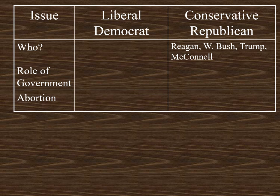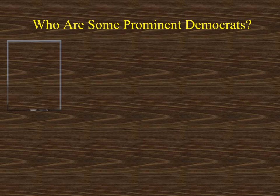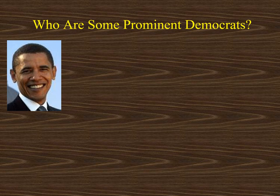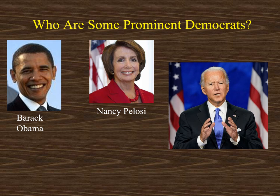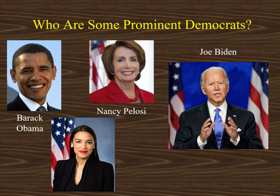On this slide, I'd like to identify some prominent Democrats. First, we see Barack Obama, who served as president from 2009 to 2017. Next, there's Nancy Pelosi — at one point she served as Speaker of the House. She is the highest-ranking woman ever in the United States government and is a congresswoman from California. Next, we see President Joe Biden, who was elected in 2020. Last, I thought I would identify AOC, or Alexandria Ocasio-Cortez. She is a newer, younger Democrat who has been in office a couple of terms in the House of Representatives.